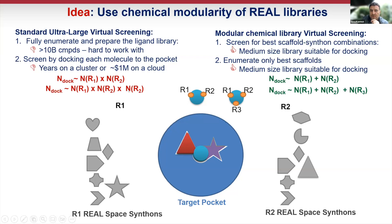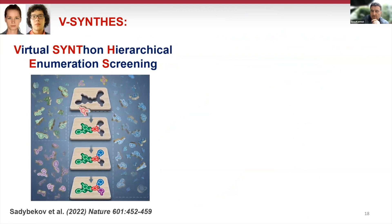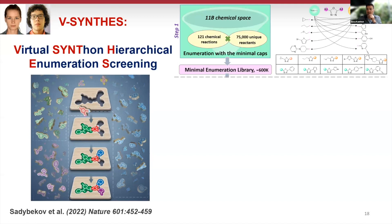What if you don't enumerate at all, but enumerate only one side of the scaffold first? Dock those partial compounds — what we call minimally enumerated fragments or MEL — into the pocket, then select the best ones and enumerate those with the second building block. This apparently requires only about 2,000 dockings instead of a million. For a three-component reaction, it becomes an even greater advantage — instead of a billion fully enumerated compounds, you have around 3,000 dockings.